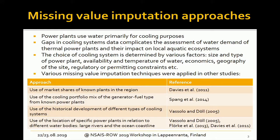Regarding the missing value imputation: power plants use water mainly for cooling, not for other purposes. For instance, nuclear energy uses a lot of water in that regard. There are actually gaps in the data — it's not known for all power plants what kind of cooling technology they have, but it's important to know in order to estimate the overall water demand.